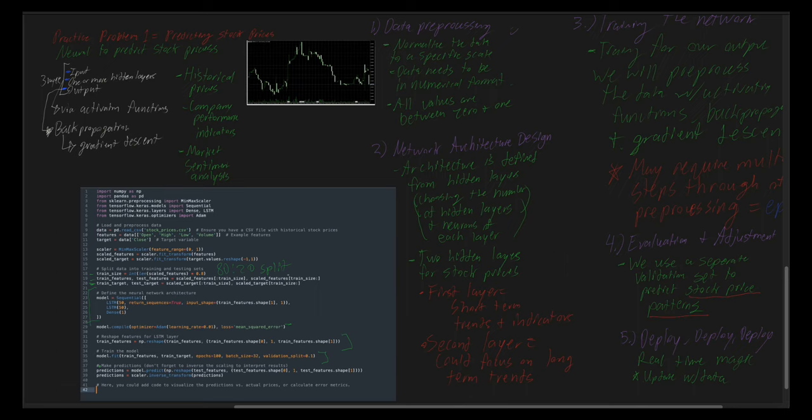We need to make sure that we don't forget to inverse the scaling and interpret the results for the following output. We can also use matplotlib in Python to output our results accordingly. However, we don't have a validation set in place, so we would need to get new data to make further predictions.